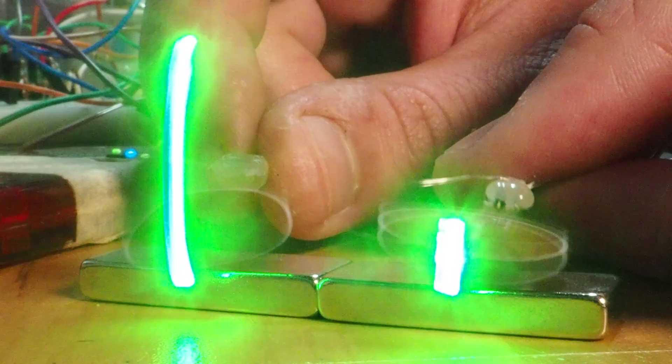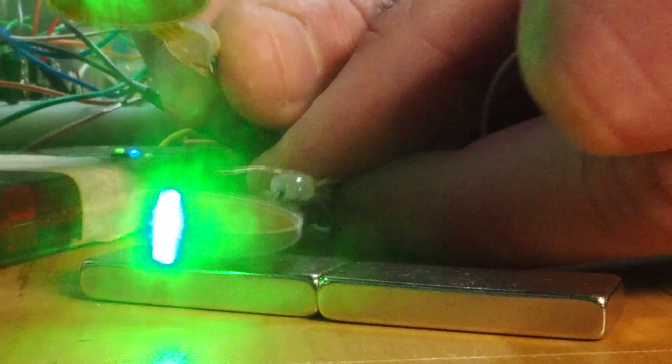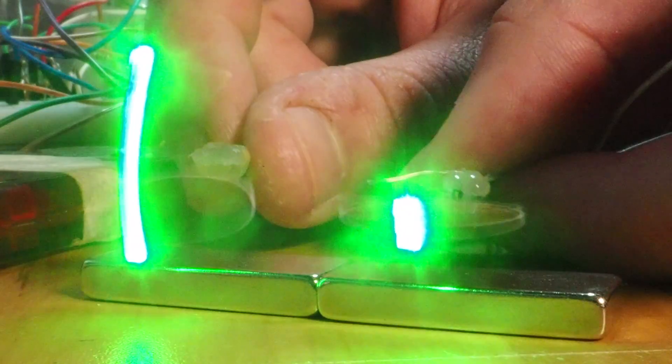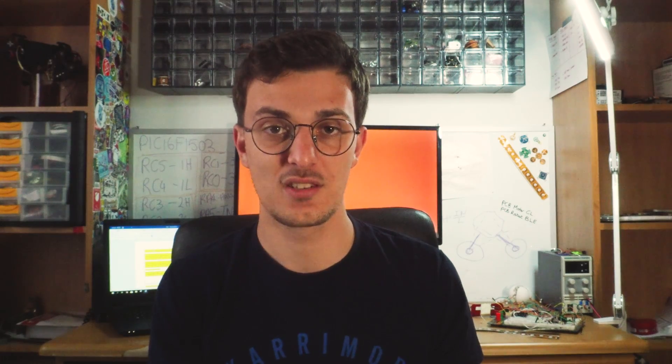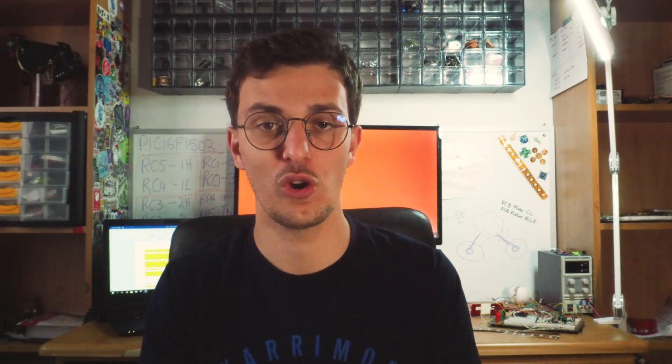But the conclusion for the 0.3 millimeter thick PCB still remains the same. They are too stiff to make any flappy movements. So if you're going to use any of my open source files, please keep in mind that you cannot make these type of motions with them.